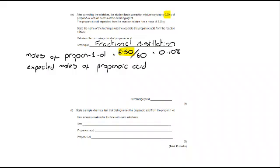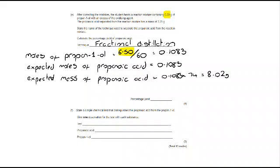From there, I can look at the expected moles of propanoic acid. We can see that we would get 0.1083 moles as well because it's a one-to-one ratio. If I know that, I can work out the expected mass by multiplying by the Mr, which brings us to 8.02 grams.